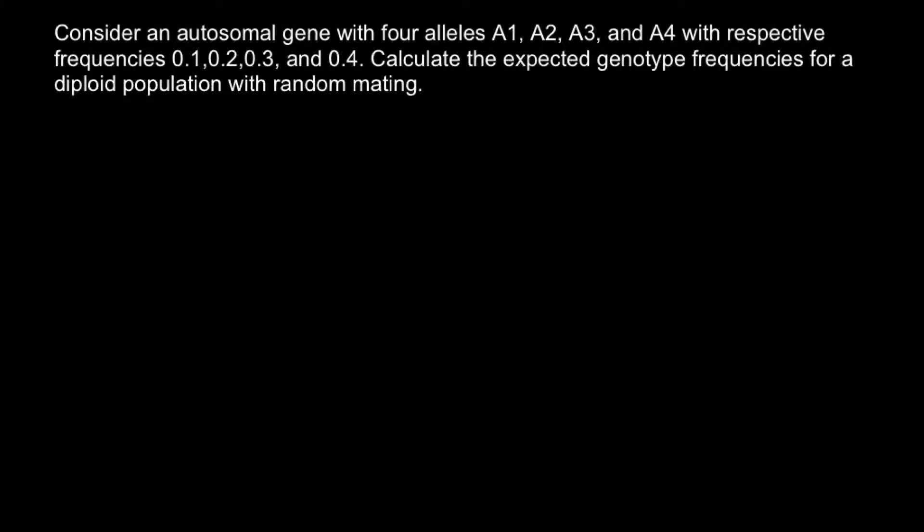Hello and welcome to Nikolai's genetics lessons. Today's problem is: consider an autosomal gene with four alleles A1, A2, A3, and A4 with respective frequencies 0.1, 0.2, 0.3, and 0.4. Calculate the expected genotype frequencies for a diploid population with random mating.